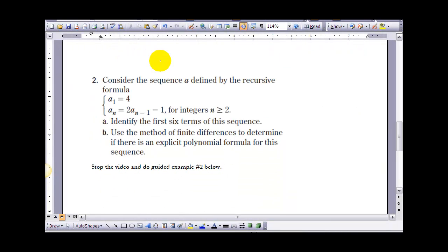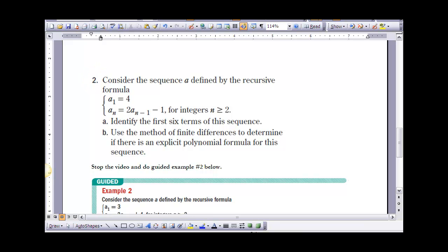So if you want to take a look then at number 2 here. In number 2 it says, consider the sequence A defined by the recursive formula. A sub 1 is equal to 4, and A sub n is equal to 2 times A sub n minus 1, minus 1 for integers greater than or equal to 2. It says, identify the first 6 terms of this sequence. So I'll have the first 6 terms. The first term is 4 that was given to us. And then for each additional term I'm putting the previous term in, multiplying it by 2, and subtracting 1.